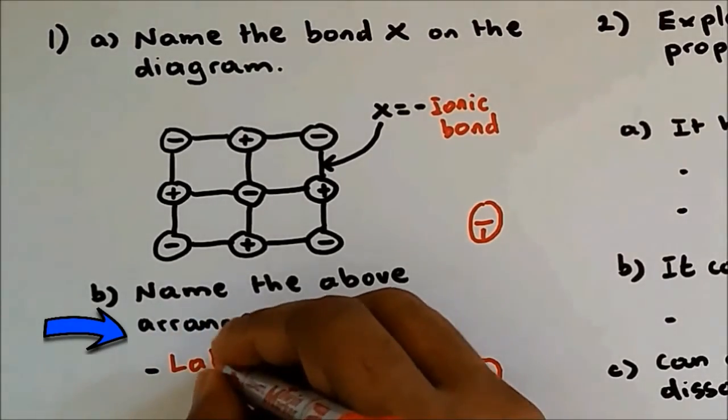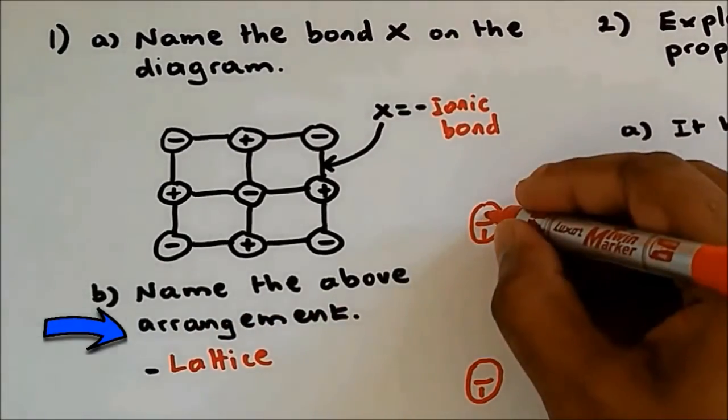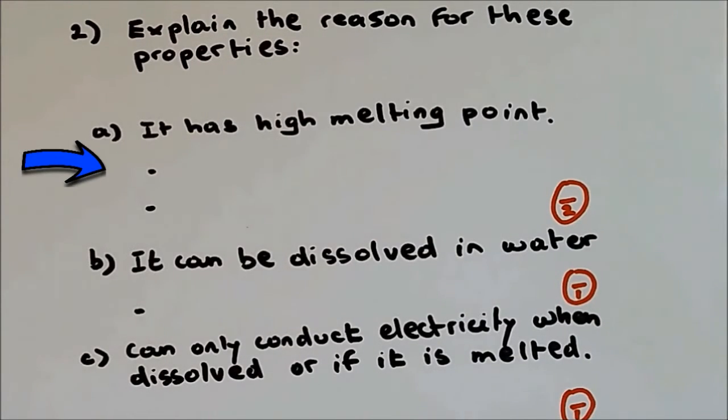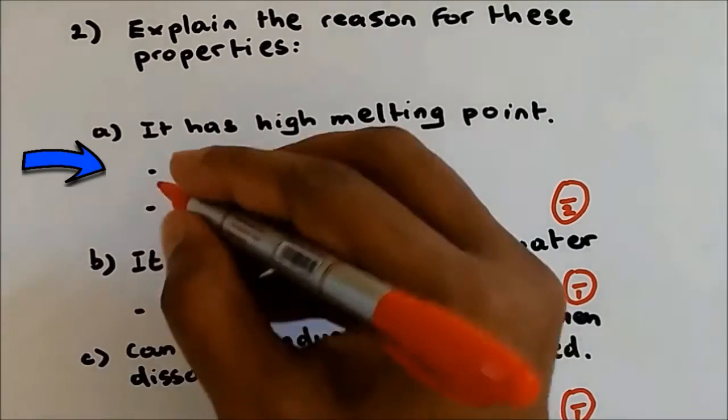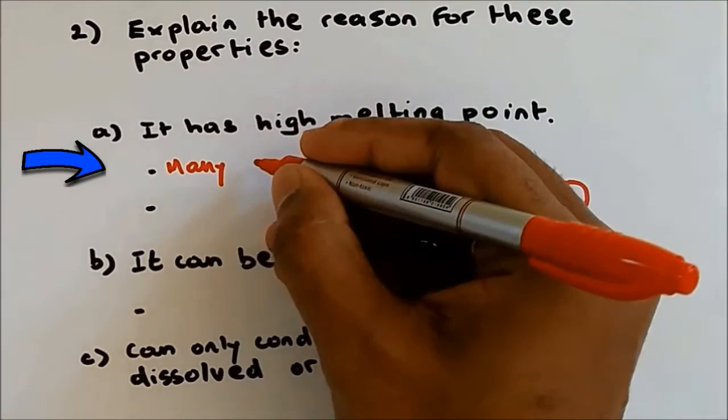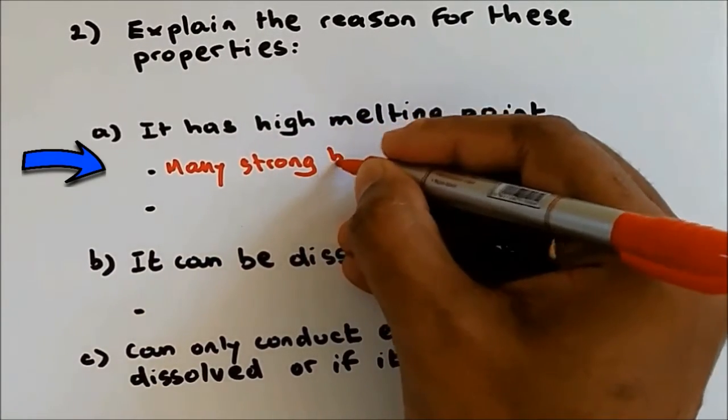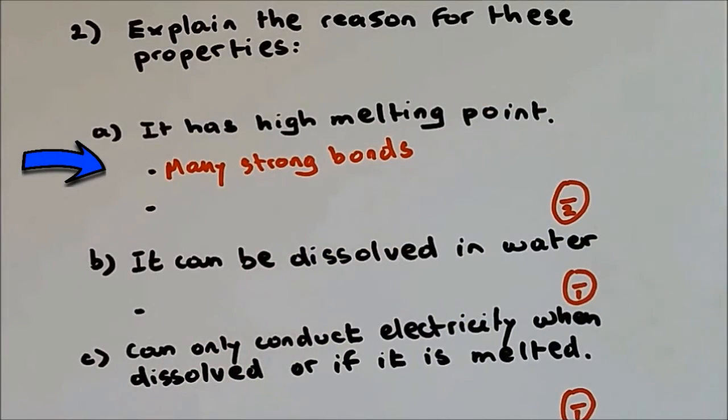Question 2: Explain the reason for these properties. It has high melting point. The reason why giant ionic structure has a high melting point is because it has many bonds and such bonds are very strong. So I'm going to write 'many strong bonds.' If it has many strong bonds, then a large amount of heat energy will be needed to break those bonds. So if a question comes up like this, you have to give two points.